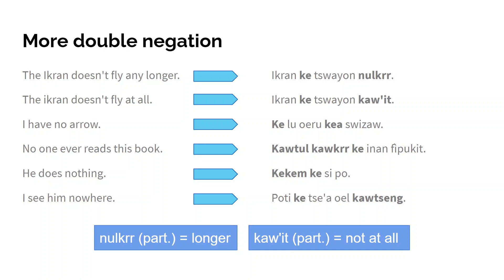Here are some more examples from the previous slide. 'I have no arrow' — again we need double negation: 'ke lu oeru' meaning 'to me there is not,' and 'kea,' meaning 'no arrow.'